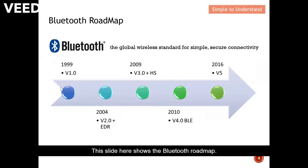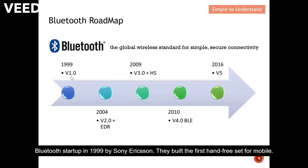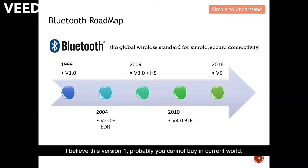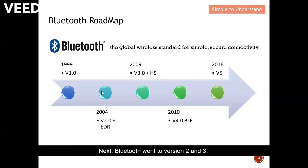This slide shows the Bluetooth roadmap. Bluetooth started in 1999 with Sony Ericsson, who built the first hands-free set for mobile. Version 1 devices are probably all in museums now. From there, Bluetooth progressed to versions 2 and 3.